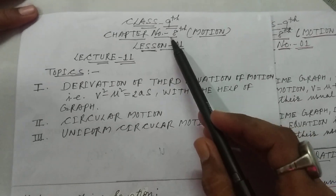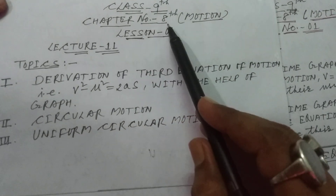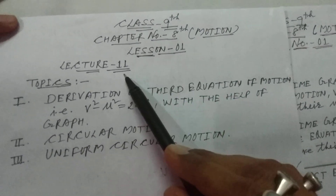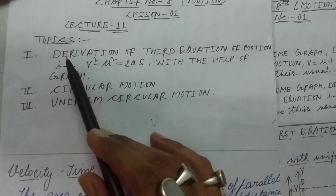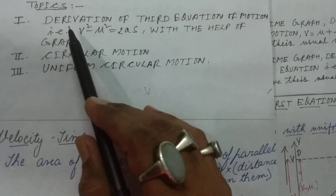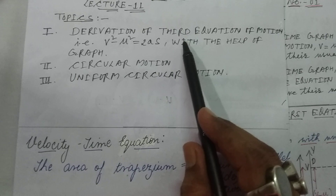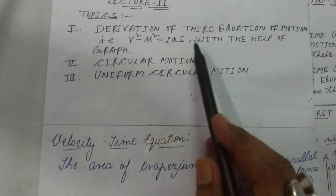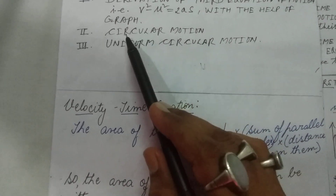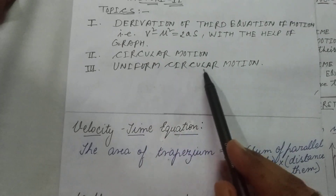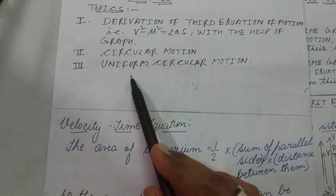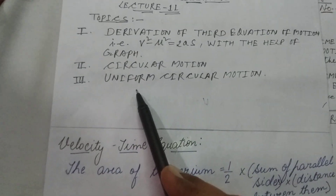Hi, I am Kumashivasto and I am going to explain chapter 8, Class 9, Lesson 1, Lecture 11. Today's topic is the derivation of the third equation of motion — that is v² - u² = 2as — with the help of a graph, along with circular motion, uniform circular motion, centripetal acceleration, and centripetal force.